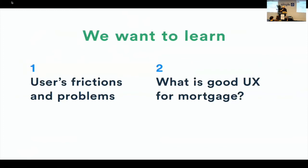With this user observation we wanted to learn two things. One: user friction — problems, very classic. But two: an important question for us — what is good UX for mortgage? Because mortgage is a very complex question in France and we want to reduce this complexity.